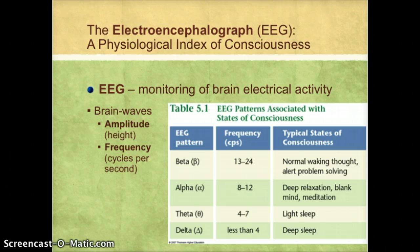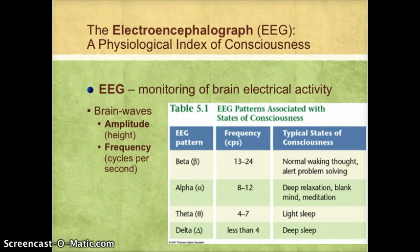Using EEGs, we've actually discovered four distinctive patterns of consciousness. Right now, hopefully, everyone listening to the video is in beta. The beta brain wave pattern is associated with normal waking thought and alert problem solving. This is also the style of brain waves you have when you're learning. If you're not in beta, you can't learn. So in order to really learn, you have to be very focused and alert.